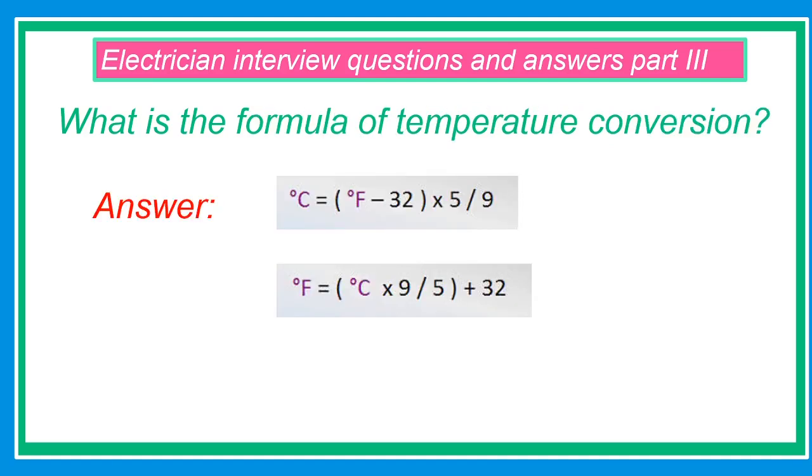What is the formula of temperature conversion? For the formula of degree Celsius: degree Celsius equals open parenthesis degree Fahrenheit minus 32 close parentheses times 5 over 9. For degree Fahrenheit: degree Fahrenheit equals open parenthesis degree Celsius times 9 over 5 close parentheses plus 32.